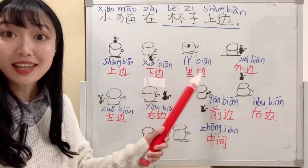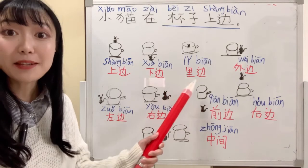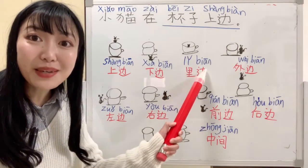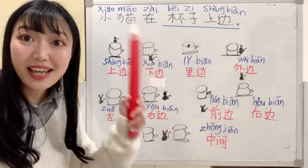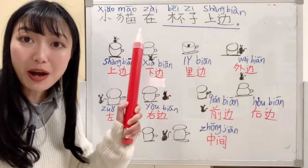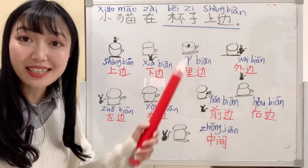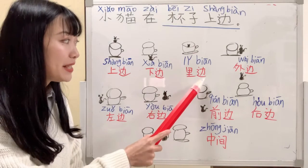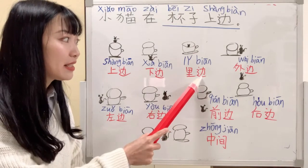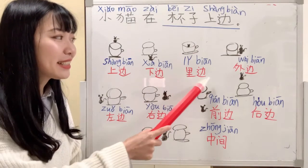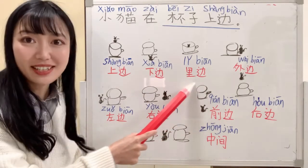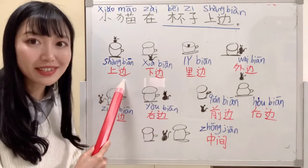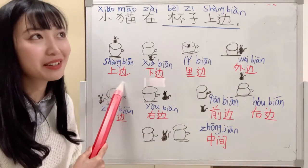So inside cup, we say 里边. 小猫在杯子里边. 里边 - 边 means the side. 里边 means inside. It's kind of like inside.